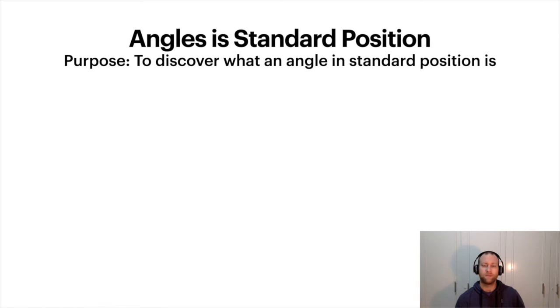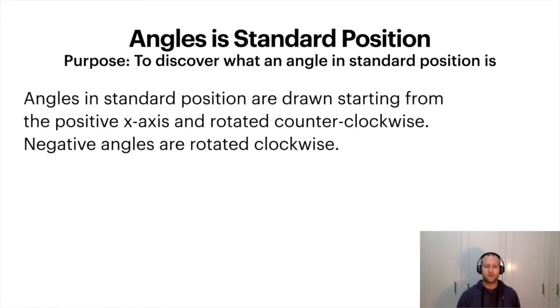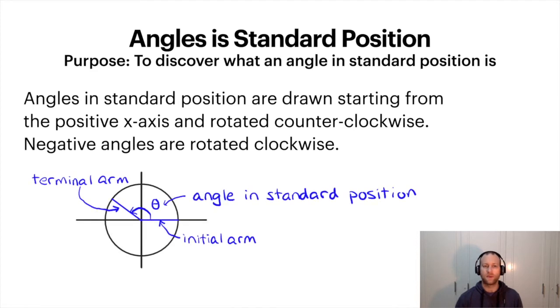So not too bad converting between them. Now let's look at standard position. So here is a big long definition. I'll show a picture to explain this in a sec. So angles in standard position are drawn starting from the positive x-axis and you rotate counterclockwise. Hopefully you know what counterclockwise is. Some people call it anti-clockwise. And then negative angles you rotate clockwise. So if I show you a diagram here, the initial arm is always at the positive x-axis. It rotates around till you get to the terminal arm. And that angle there is in standard position. So notice I started at the positive x-axis rotated counterclockwise to where my degree is.